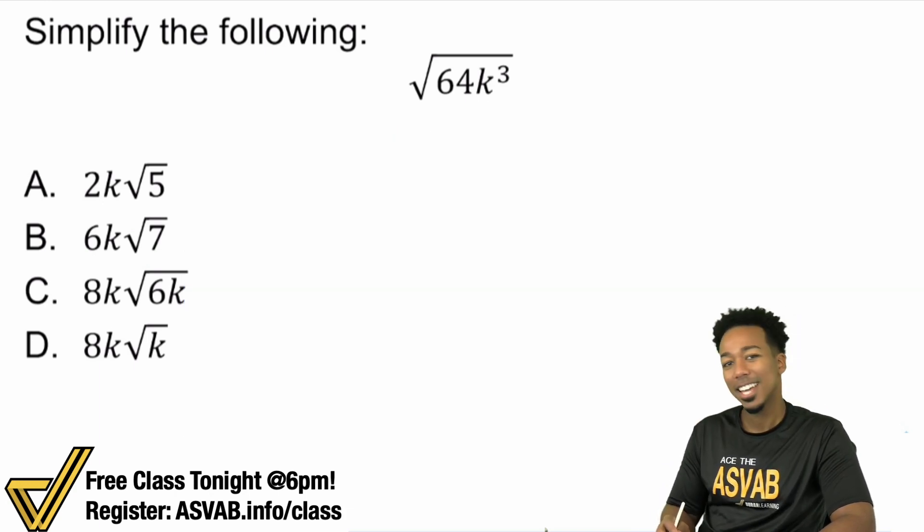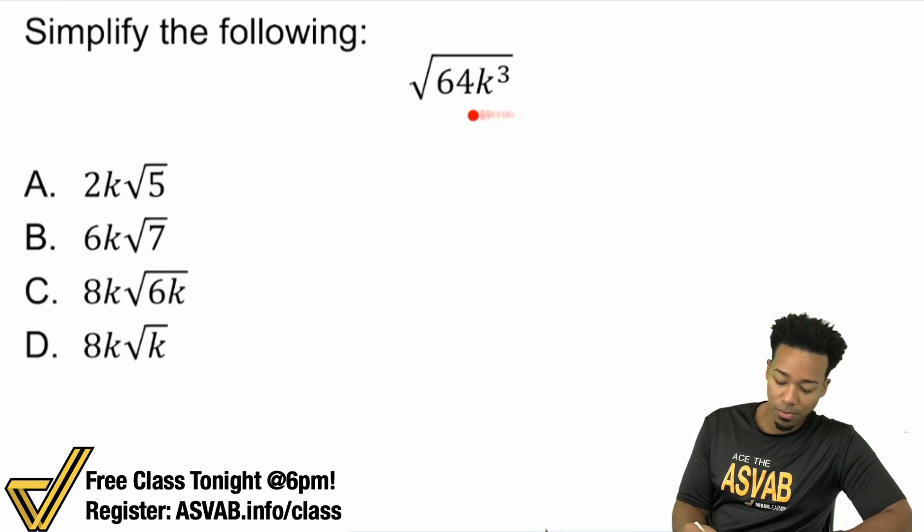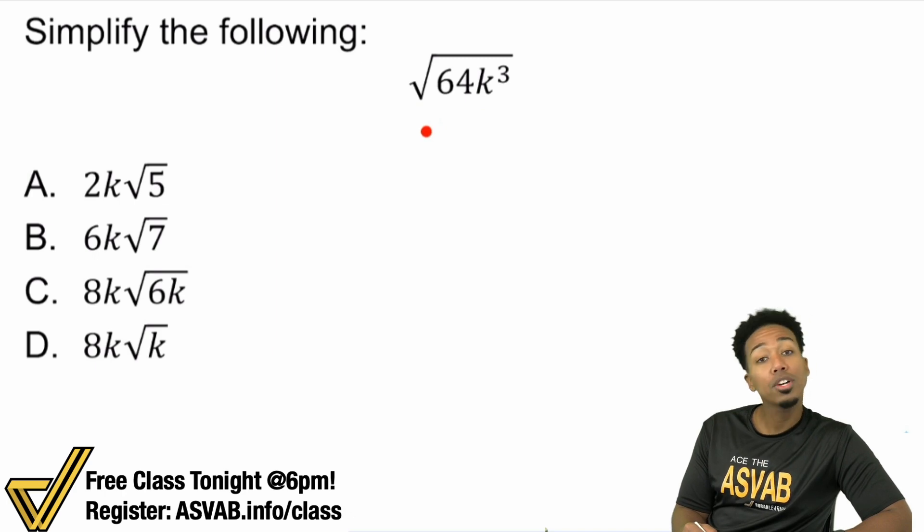So with that said, let's go ahead and cross this here. So we have the square root of 64k³. What are we doing here? Well, here's how this works.